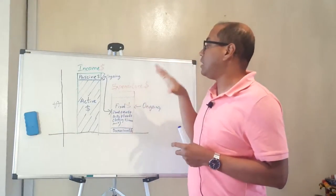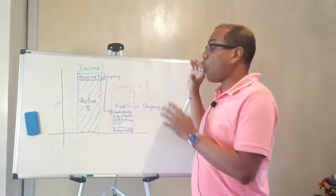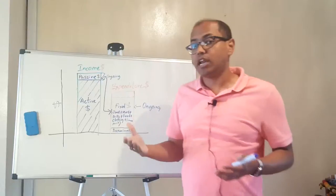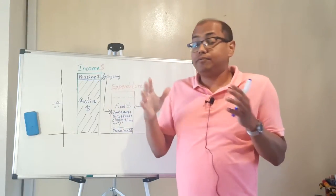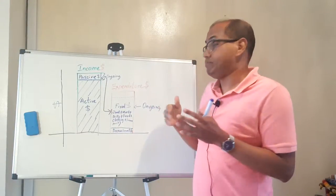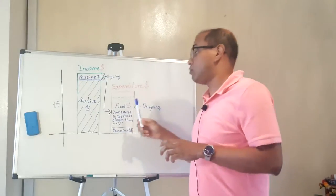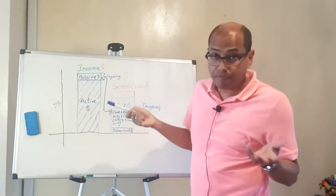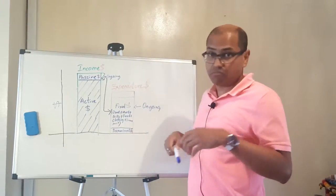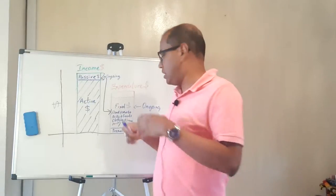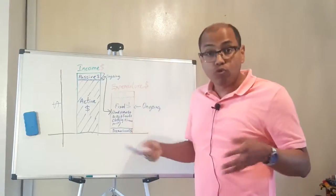If you go into the expenditure, let's analyze our expenditure. Exactly like income, we have ongoing expenditure and occasional expenditure. Ongoing means it doesn't matter if you have a job or not, as long as you're alive that expenditure will be there. For example, rent or if you have your own house on a housing loan, your mortgage, or your bills - electricity, gas, water, housing tax or council tax, food, clothing.